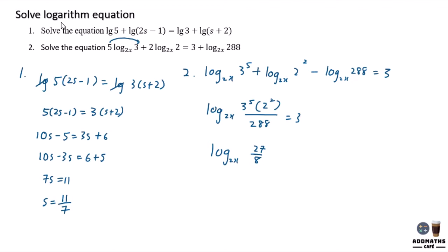In this case, use calculator to calculate what's inside here and this will give you 27 over 8 equal to 3. Change this into indices form, it will give you 2x to the power of 3.